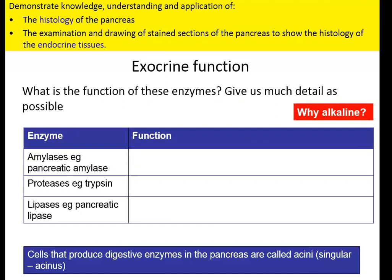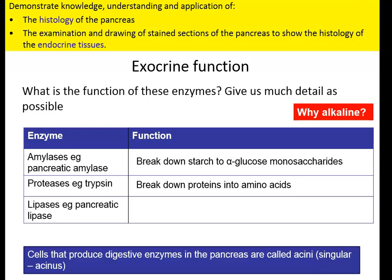Let's remind ourselves of these enzymes and the exocrine function. We've got amylase, proteases such as trypsin, and lipase. Because amylase and lipase are made in other parts of the body as well, we refer to these as pancreatic amylase and pancreatic lipase. Amylases break down starch into alpha-glucose monosaccharides. Proteases break down proteins into amino acids. And lipases break down lipids into fatty acids and glycerol. This is a good point to go back and do some revision on amylases, proteases, lipase, starch, proteins, and lipids from year 12.